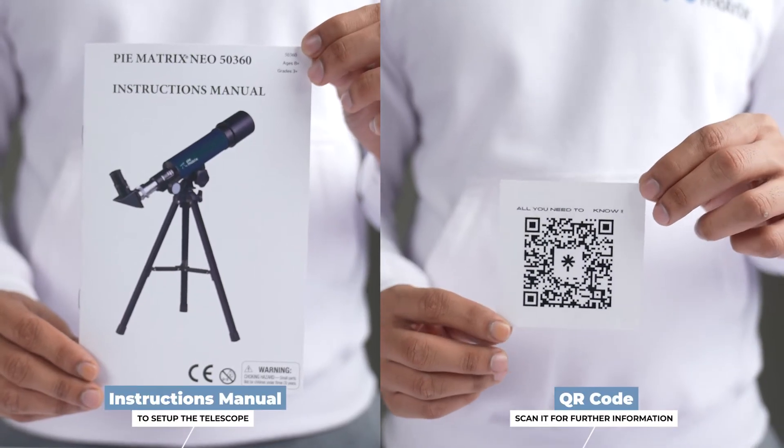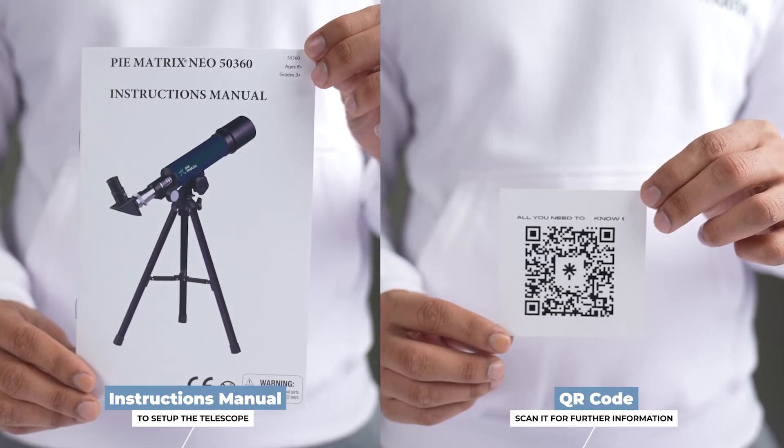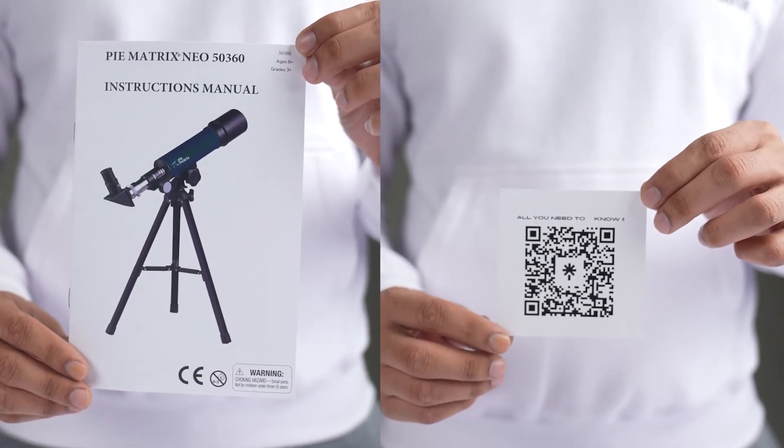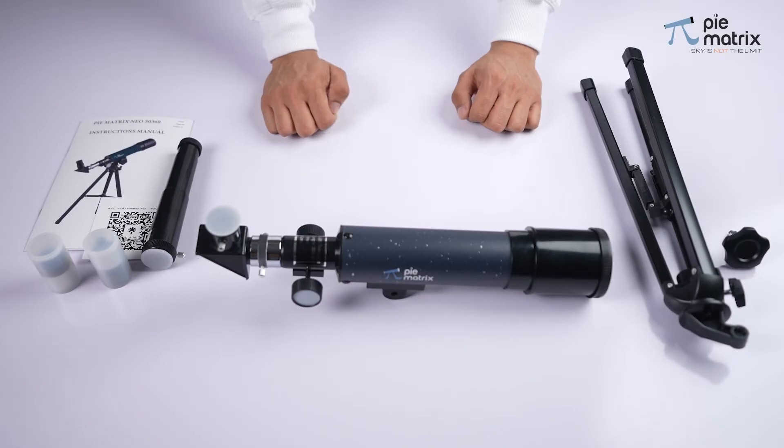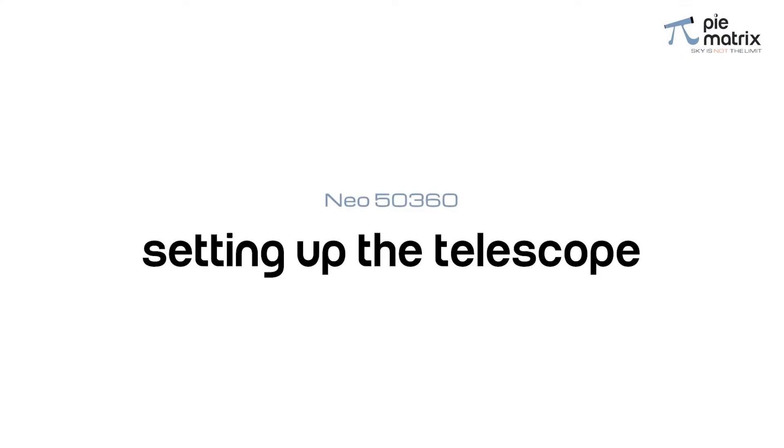We also get an instructions manual along with an all-in-one QR code. Let us take a final look at everything included in our NIOs box and begin assembling the telescope.